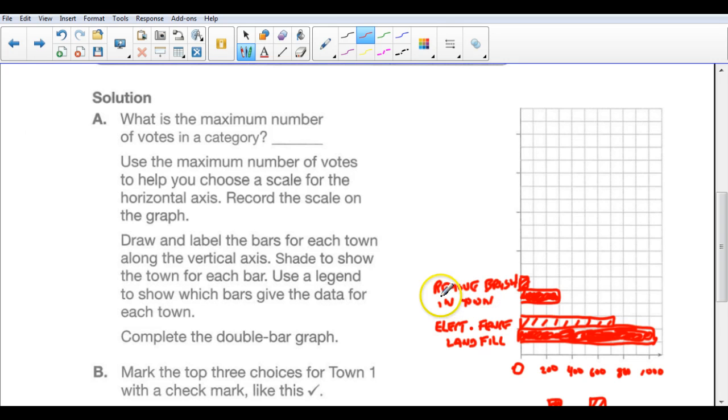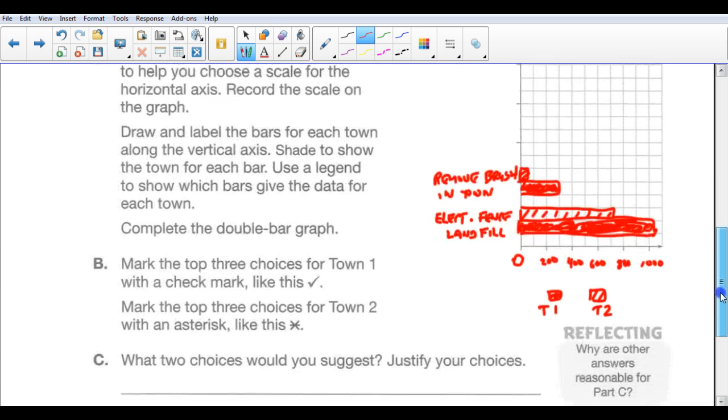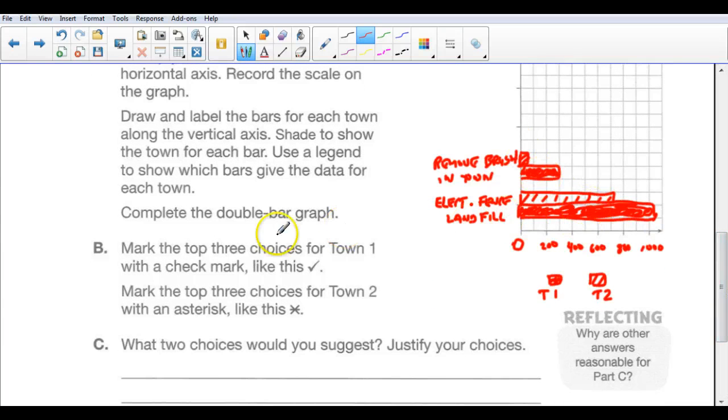So, what you want to do is you want to label this as neatly as you can. You want to draw it as neatly as you can. It's very difficult for me to do it with this pen on here. But if you've got a ruler and colored pencils and you print neatly, you can make a really nice bar graph. So, it says complete the bar graph. The double bar graph. I just did two categories. You can do them all.